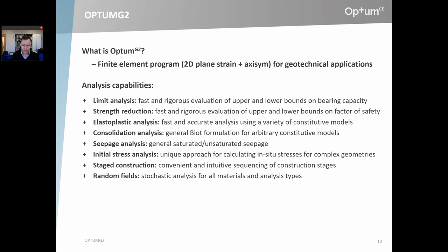Limit analysis is one of the basic analysis types of Optum G2 — quite a unique feature not available in any other commercial program. It's a very powerful technique for evaluating the bearing capacity or the limit load of structures without having to perform a full load-displacement analysis, so you can evaluate bearing capacities in one quick calculation. And not only that — you don't just get an approximate estimate, but you get rigorous upper and lower bounds, which really adds a lot of confidence to your results. This is the topic of module 2.